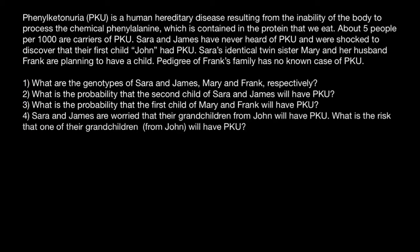In order to solve this problem we have to start with building a pedigree for this family. We know that Sarah and her husband James have a child named John who has PKU. So here is Sarah and here is James — let's put S on top, James here — and they have a son with PKU whose name is John, also J here, and he is affected with this genetic disorder.